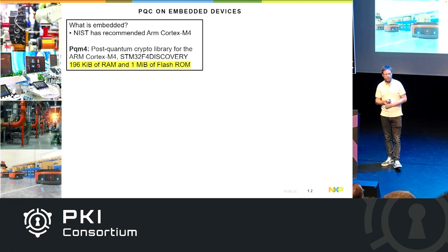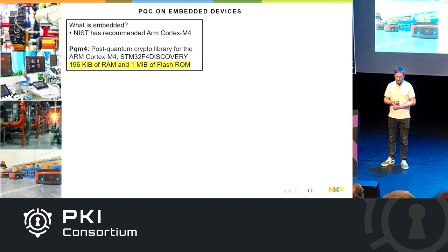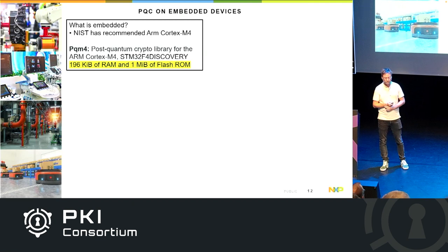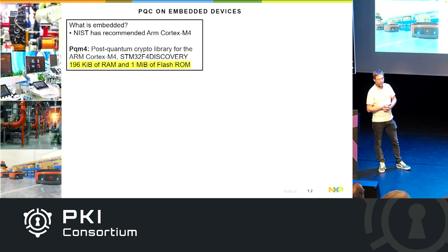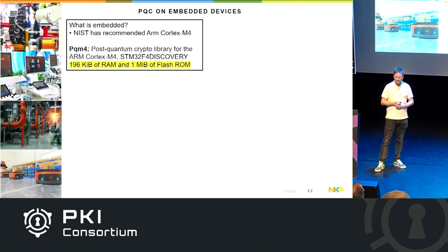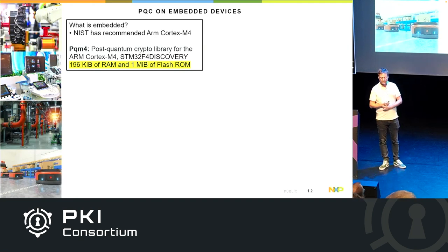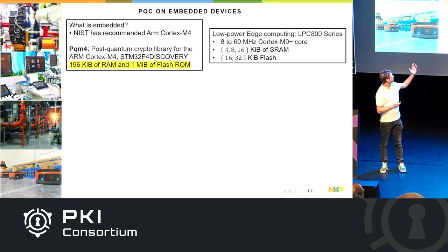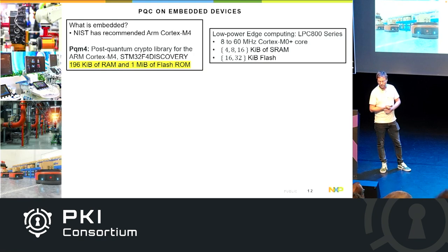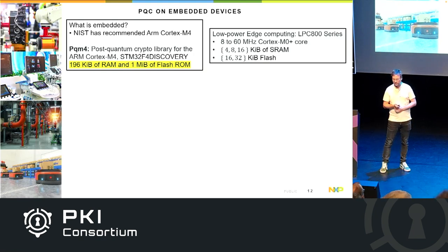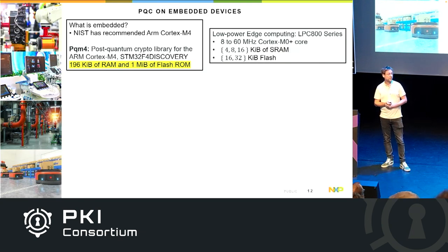What do I mean by embedded? It's quite different from what NIST defined. On the NIST mailing list a couple of years back there was a discussion, driven from the academic community, and they settled on a Cortex-M4 with 196 kilobytes of RAM and a megabyte of flash ROM as the default embedded platform. For us, that is super high-end. Typical devices in our low-power, edge-computing range from 8 to 60 MHz, have 4 to 16 kilobytes of SRAM, and 16 to 32 kilobytes of flash — significantly lower than what most academic publications consider.